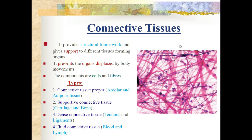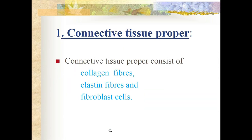Connective tissues are of four types: connective tissue proper - examples are areolar and adipose tissue; supportive connective tissue - examples are cartilage and bone; dense connective tissue - examples are tendons and ligaments; and fluid connective tissue - examples are blood and lymph.